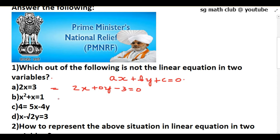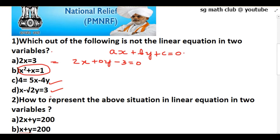For a linear equation, the degree of the variable in the polynomial must be 1. In the option x² + x = 1, the degree is 2, making it a quadratic equation — not a linear equation. The remaining options are both linear equations in two variables. So the answer is: x² + x = 1 is NOT a linear equation in two variables.